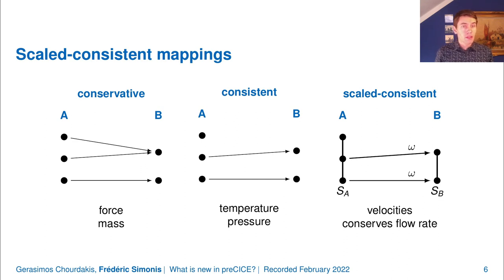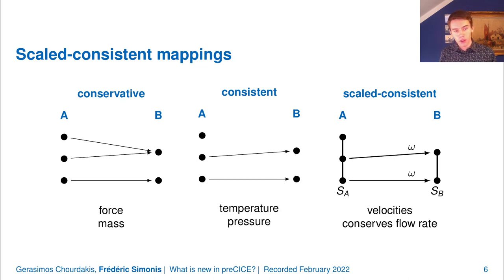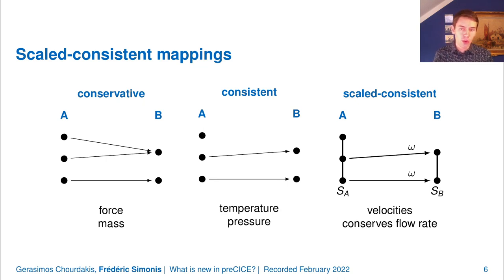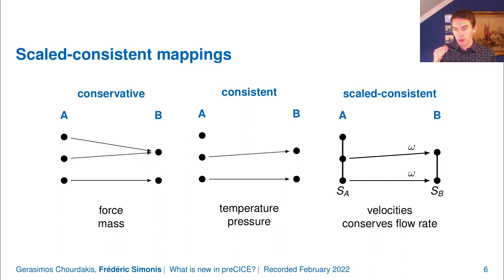Next up are scale consistent mappings. In Precise, mappings come with certain constraints. We always had conservative and consistent mappings: conservative is used for conservative data like forces or mass, and consistent for normalized data like temperature or pressure. Scaled consistent is basically the same as consistent mapping, but it also uniformly scales the output so that the surface integral of the input and output are equal — very useful for mapping velocities while conserving the flow rate.